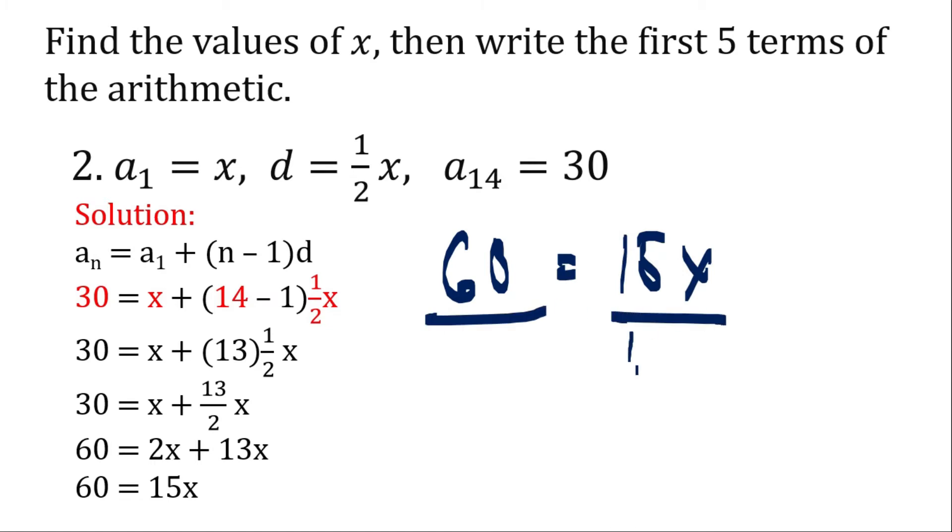Now 60 is equal to 15x. Divide both sides by 15. So the answer would be 60 divided by 15 is 4. X is equal to 4.